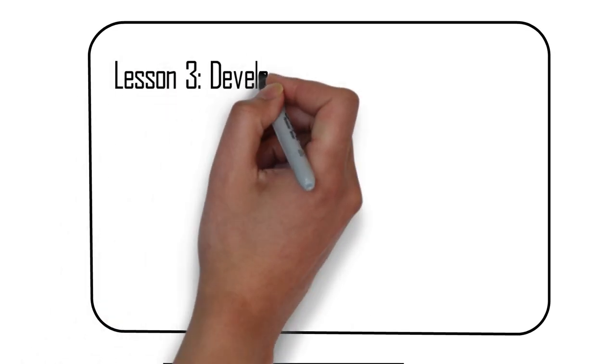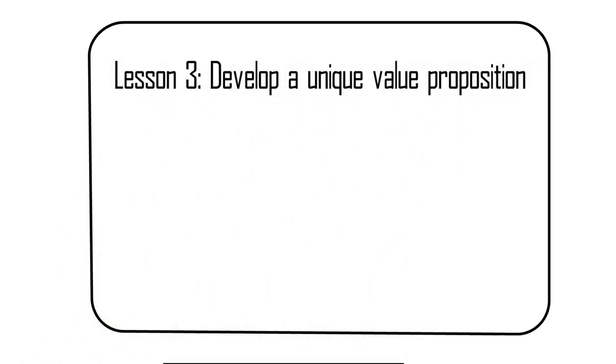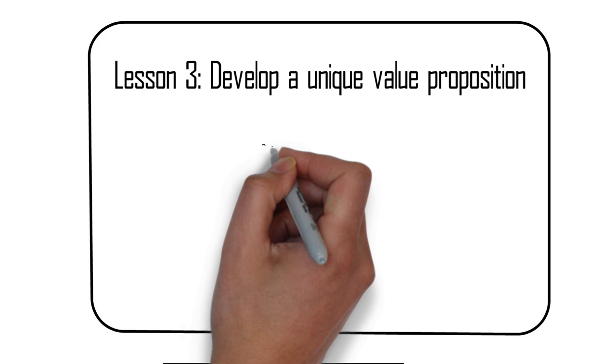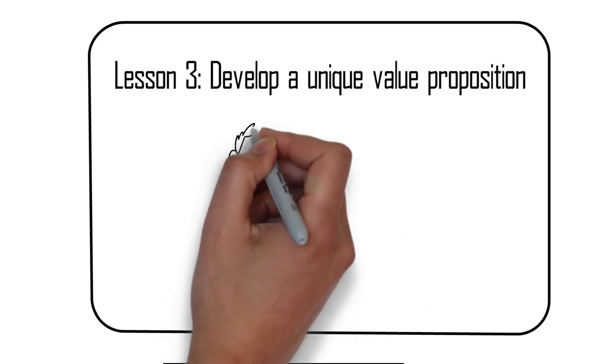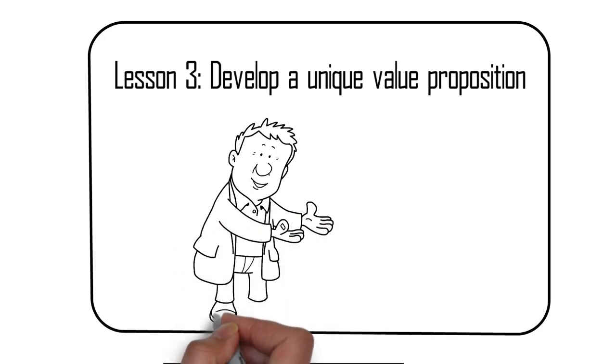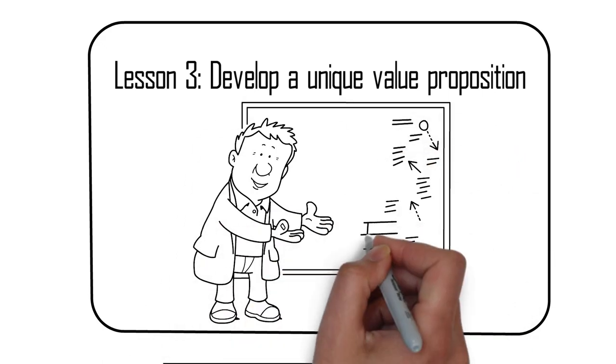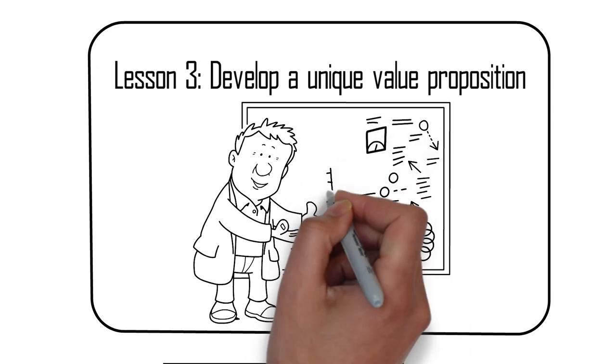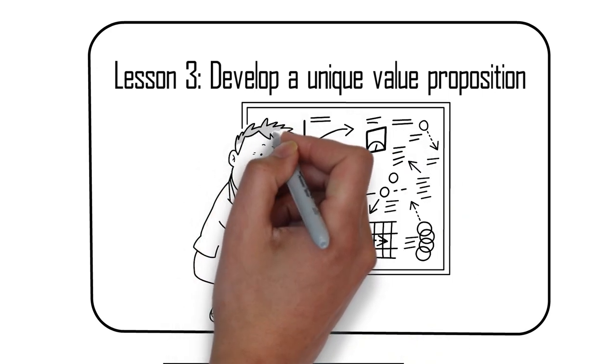Lesson 3: Develop a unique value proposition. The third lesson from the book is the importance of developing a unique value proposition. This is a compelling idea or product that sets you apart from the competition and provides customers with something that they can't find anywhere else. DeMarco argues that this is the key to creating a successful fast lane business as it allows you to attract customers, generate high margins and grow your business quickly.